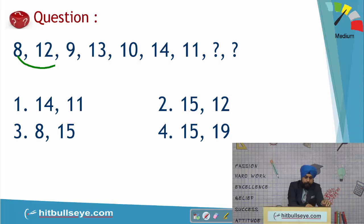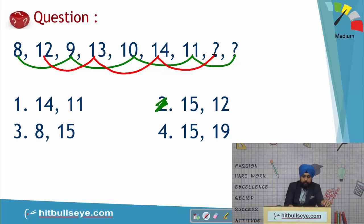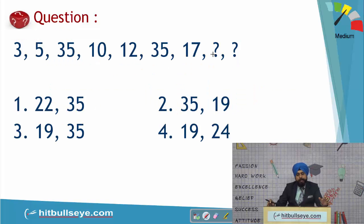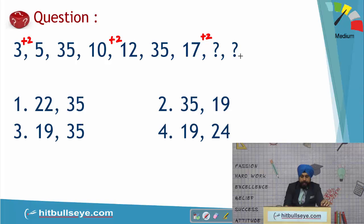Moving on to series questions. The first series is 8, 9, 10, 11 — so 12 will come next, which is given in the options as your answer. The second scenario has 12, 13, 14, and the next number will be 15. The next question looks like a tricky series but the logic is simple: 3 + 2 = 5, then 35, then 10 + 2 = 12, then 35, then 17; doing +2 gives 19, and then it has to be 35. So the answer is 19 and 35 — choice number 3.